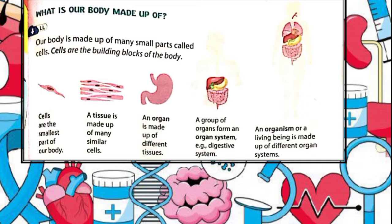Skeletal, muscular, nervous, respiratory, digestive, circulatory and excretory systems are examples of our different organ systems.